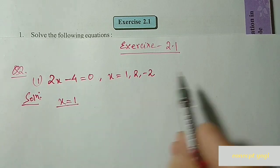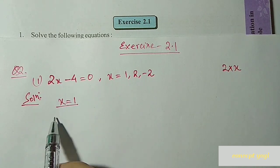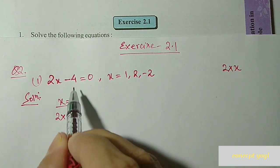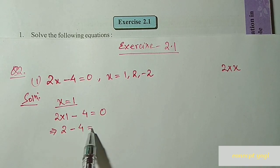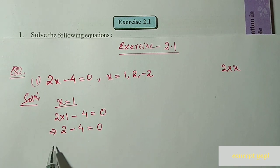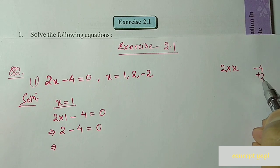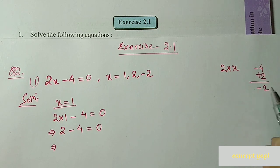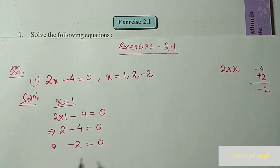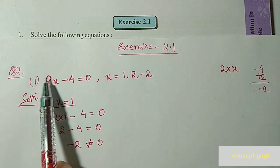2x means 2 into x, so we replace x by 1: it becomes 2 into 1, minus 4, equal to 0. Solving: 2 minus 4 gives minus 2. Left hand side is minus 2 and right hand side is 0 — they are not equal. So x equal to 1 is not the solution of this equation.